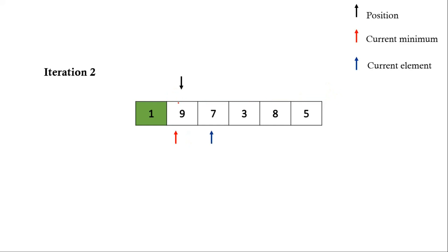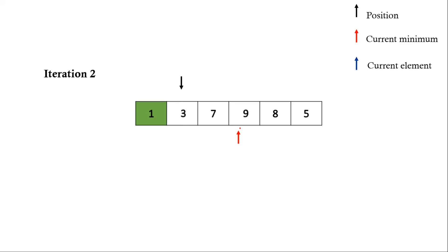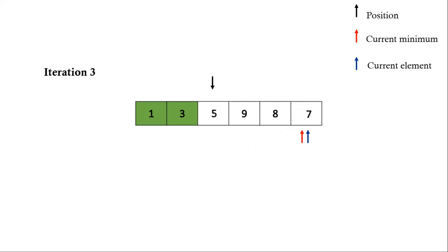We move forward with current element. 7 is smaller than 9, so we update the current minimum pointer. 3 is also smaller than 7, so we update current minimum again. 8 and 5 are not smaller than 3, so current minimum points to 3. We swap 3 and 9 — now 3 is at its right position. In iteration 3, we find 5 is smaller than 7, and after swapping, 5 is at its right position.